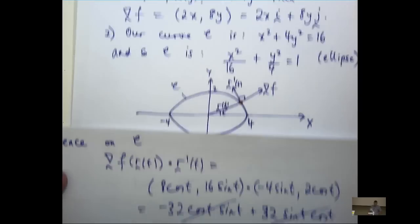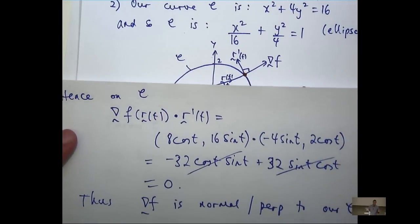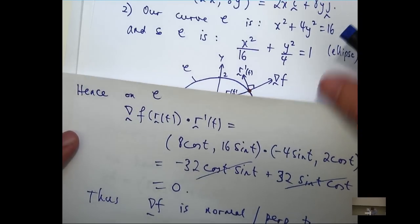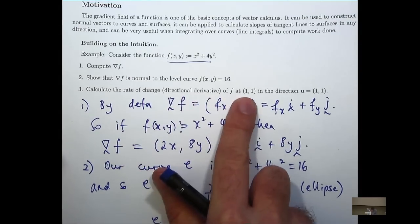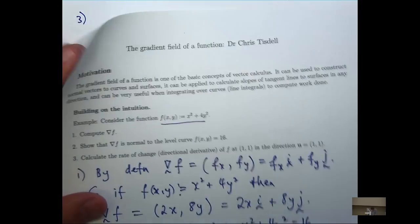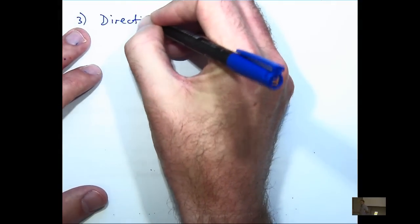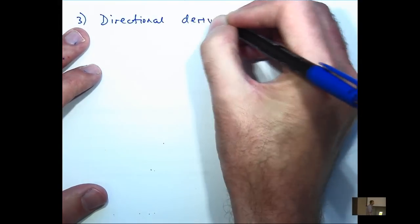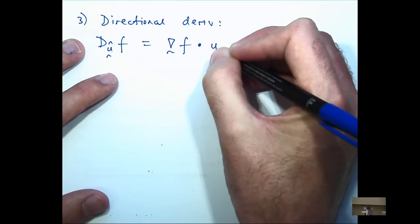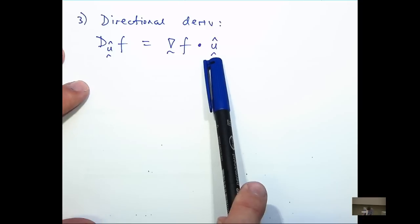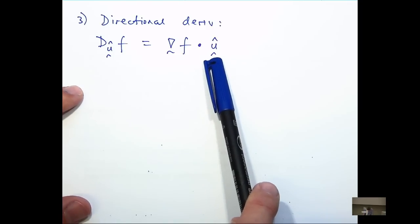Thus, grad f is normal or perpendicular to the tangent vector, and thus our curve C. You could have proved this in a more general way using the chain rule, but it's not really necessary for this particular example. The last question is calculate the rate of change, the so-called directional derivative of f, at this point in this direction. Now, our function f is a polynomial, and therefore it's differentiable. For differentiable functions, the directional derivative, which we denote by this, is just computed using the gradient and a unit vector in the direction of interest. It's a dot product.